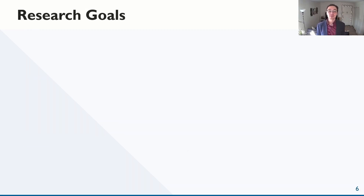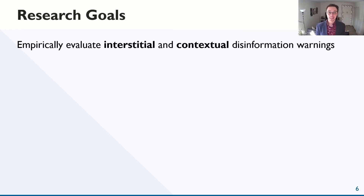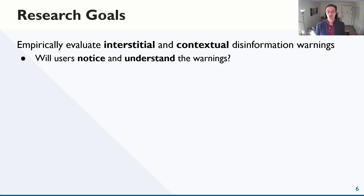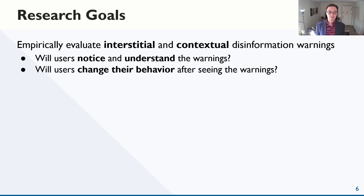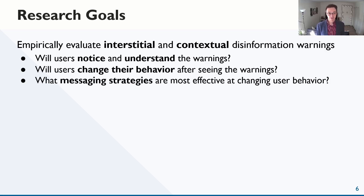Our research draws heavily on these findings. We aim to empirically evaluate interstitial and contextual disinformation warnings to answer three questions. First, would users notice the warnings, and would they actually read and comprehend what the warnings were telling them? Second, how would warnings affect user behavior — not reported behavior, but actual behavior? Finally, how do different messaging strategies affect user behavior differently?